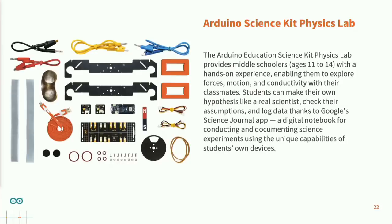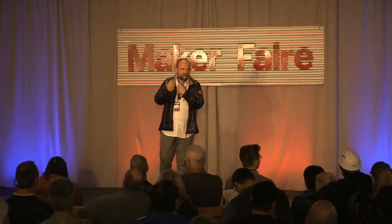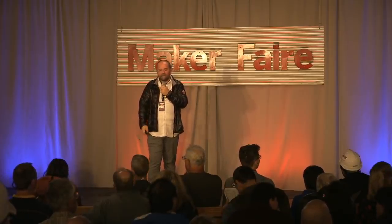If you have the chance to go to the Arduino booth, you should check out the Arduino Science Kit Physics Lab — a kit we developed with Google. It uses the Google Science Journal app, a mobile phone app that gets data from this board via Bluetooth. You can do a bunch of experiments. This is designed for kids in junior high school so they can learn about physics. The whole thing is themed around a fun fair — every ride of the fun fair teaches about something in physics. You build the example, connect it to the phone, and gather the data. In a lot of parts of the world, kids have smartphones, so why use a computer when they're looking at the phone all the time anyway?